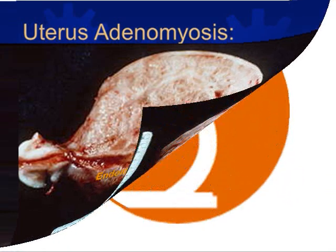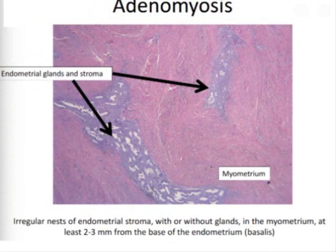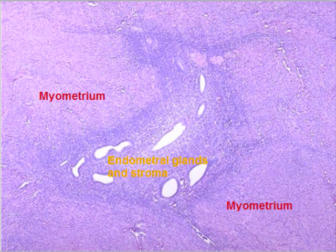If the uterus is examined under the microscope — normally there is an irregular endometrium-myometrial junction — but in adenomyosis, the endometrial glands are present deep in the myometrium, at least 2–3 mm from the base of the endometrium, that is the basal layer. Here you can see a cluster of endometrial glands and stroma surrounded by myometrium.